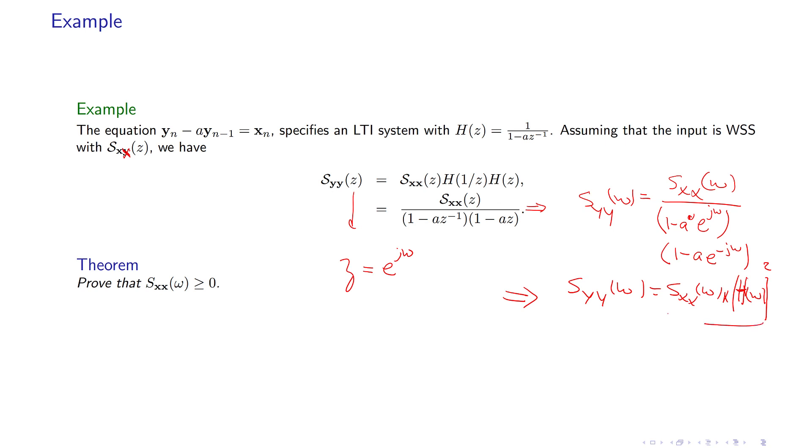You have the same results for continuous time. And this is the theorem. So the power spectral density of a discrete random process is a real non-negative number.